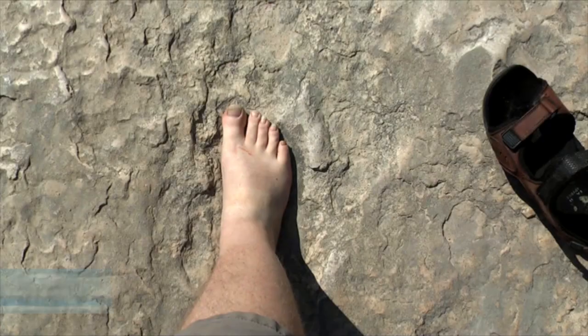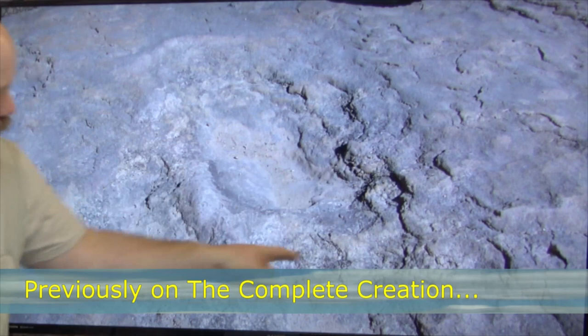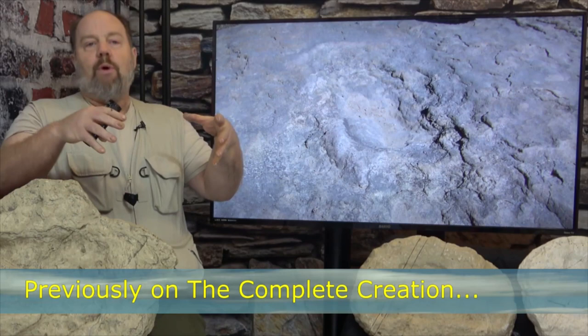Previously in the Complete Creation: one of the more important features of this particular track is the prominent displaced mud surrounding the footprint. This is called the expulsion rim, and it's simply caused by the foot of the person or animal stepping into the mud, and the mud getting displaced around the perimeter of the foot.